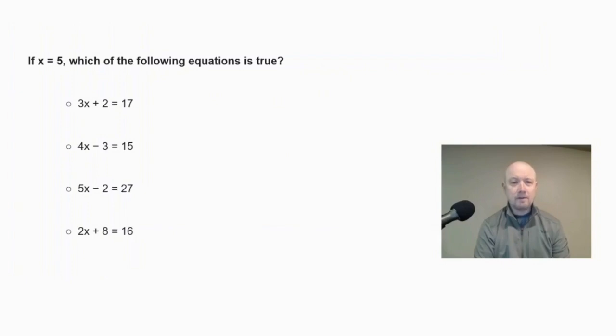If x equals five, which of the following equations is true? Is it 3x + 2 = 17? 4x - 3 = 15? 5x - 2 = 27? Or 2x + 8 = 16?